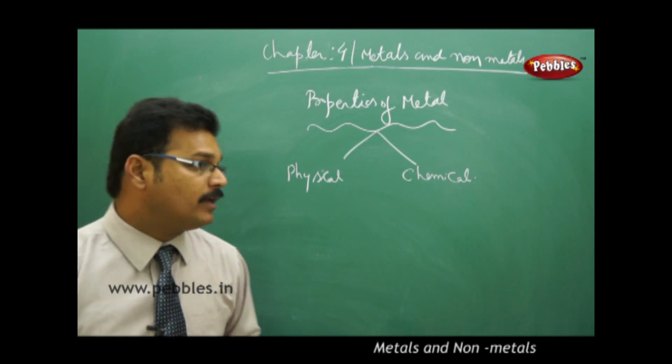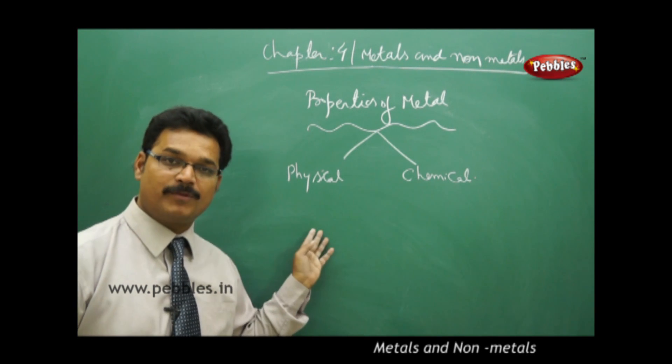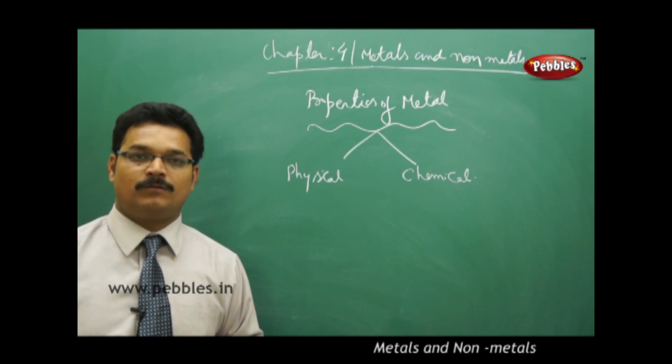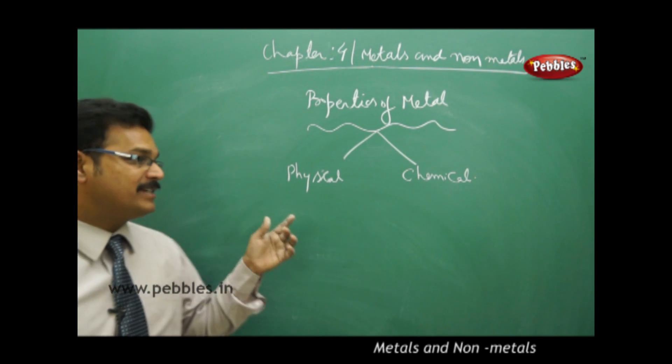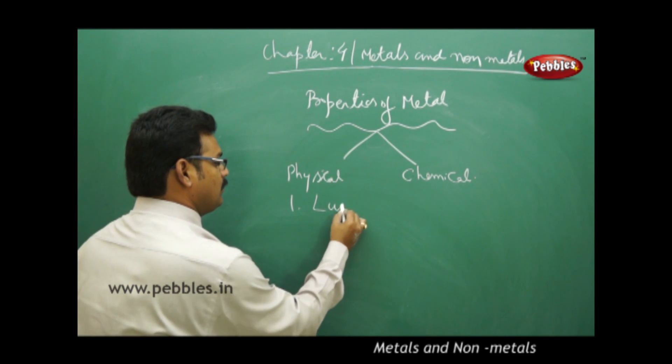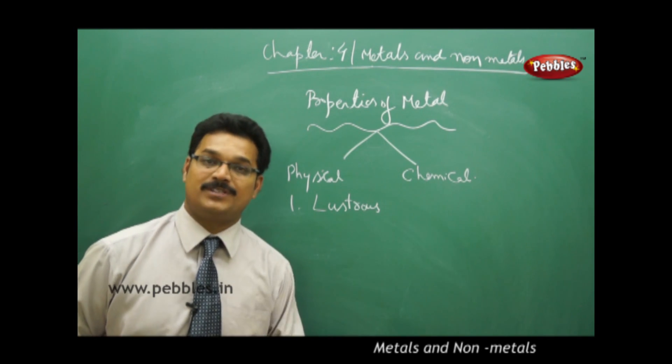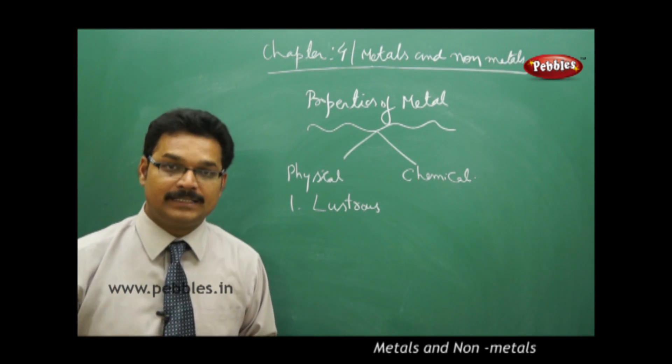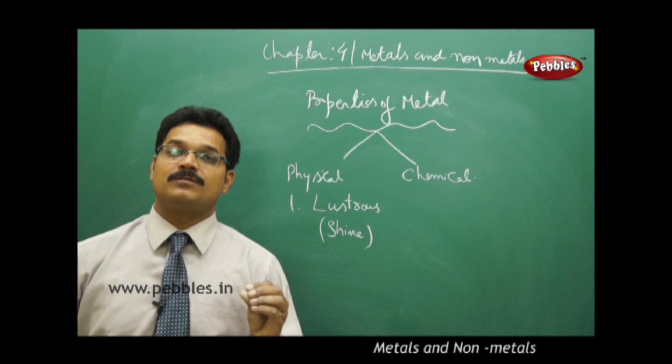Let me tell you about different properties of metals. If you see the properties of metals, basically there are two types: physical properties and chemical properties. Physical properties means properties we're able to see and observe. The first physical property is lustrous.